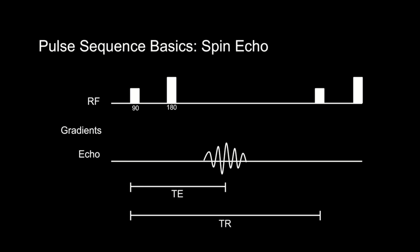In a spin echo pulse sequence, there are two RF pulses at the beginning: a 90-degree RF pulse followed by a 180-degree RF pulse. Technically a spin echo can start with any two RF pulses, but most commonly we use a 90 followed by 180 degrees — that's how we identify it as a spin echo sequence. The 90-degree RF pulse tips the spins into the transverse plane and causes the nuclei to precess in sync in the XY plane.